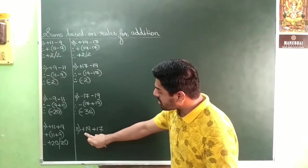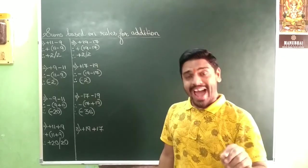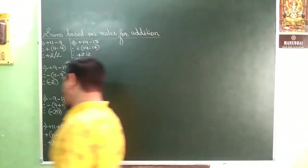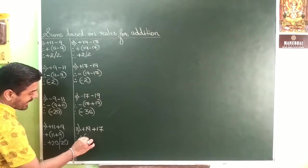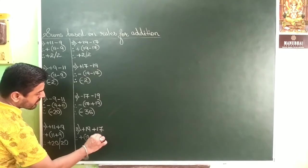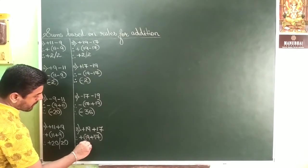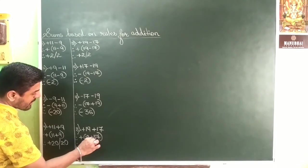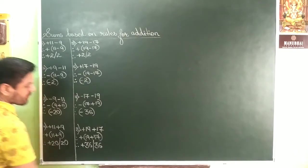When both numbers are positive, put a plus sign and always add the numbers. So I will put a plus sign and always add the numbers. The correct answer will be positive 36, and we will write only 36. Clear?